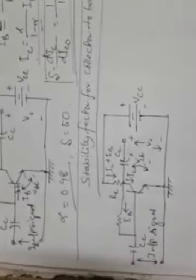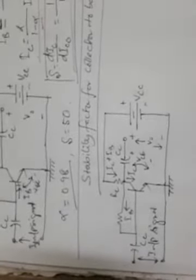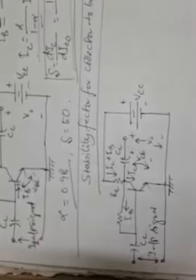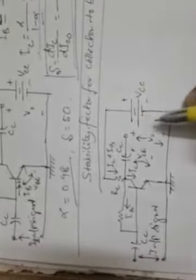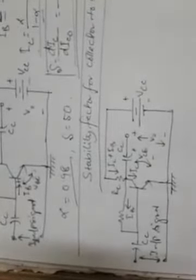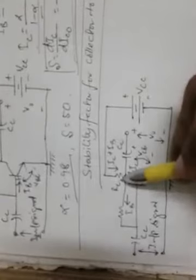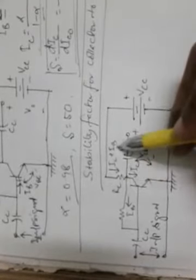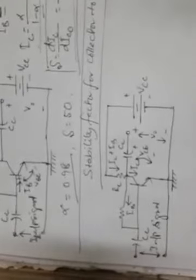In this lecture we will calculate the stability factor from this circuit. This modified circuit from the fixed bias is capable of giving better stability. The rise in IC due to increase in temperature will mean that this increase of IC will increase the voltage drop across the resistance RC, since IC is far greater than IB, so primarily the drop across RC is due to IC.